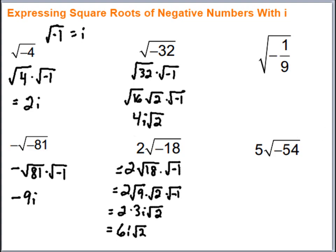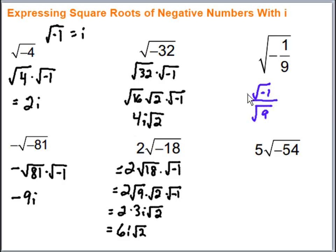Now for the square root of negative 1/9. We can break that up by applying the square root separately to the top and bottom numbers. I place the negative on the 1 in the numerator — we wouldn't put it on both pieces because the negatives would cancel. So leaving it on the top gives us the square root of negative 1 over the square root of 9, which simplifies to i/3.